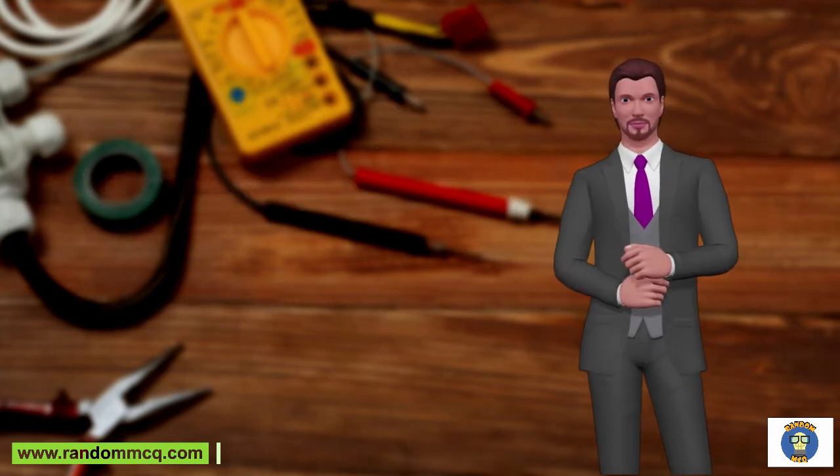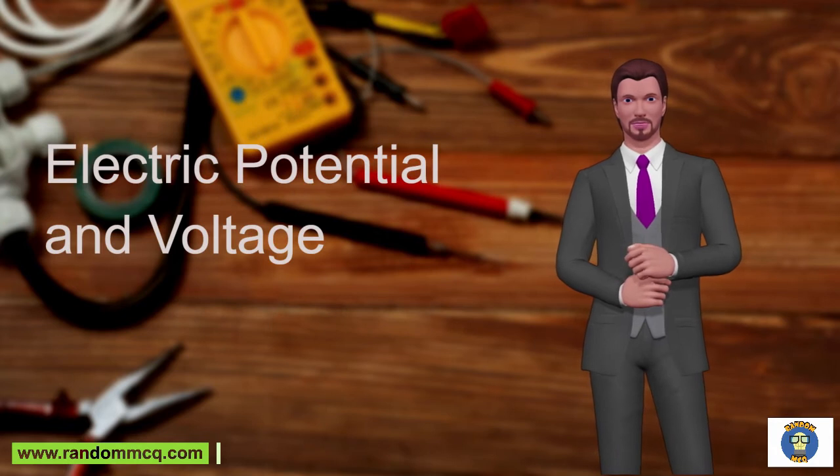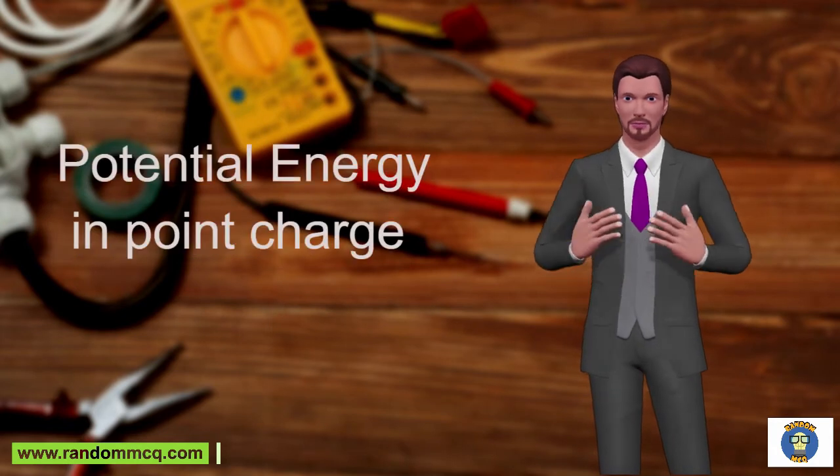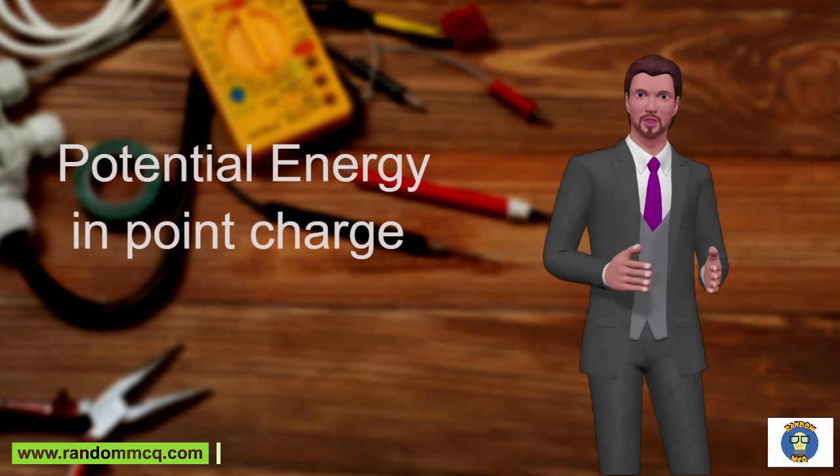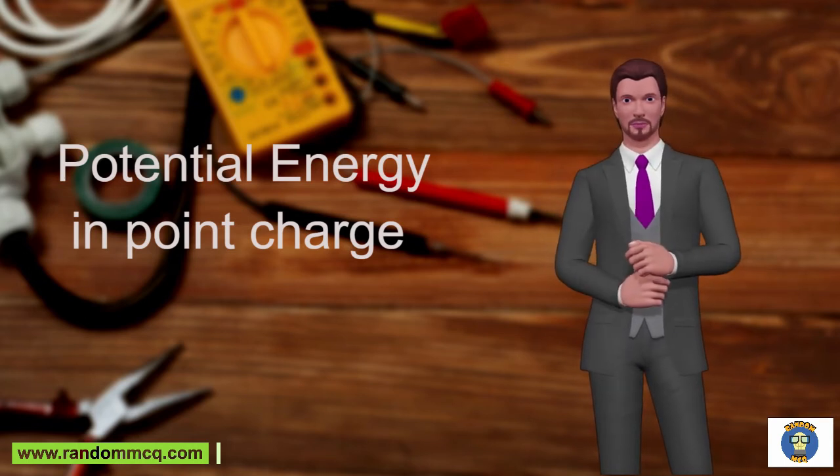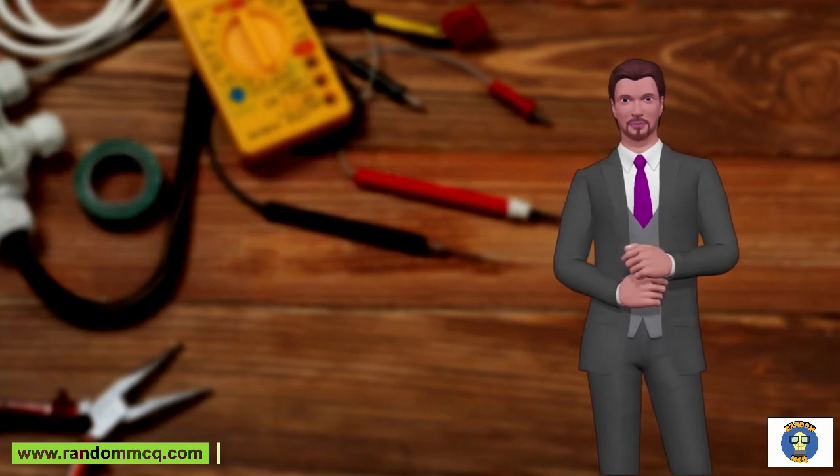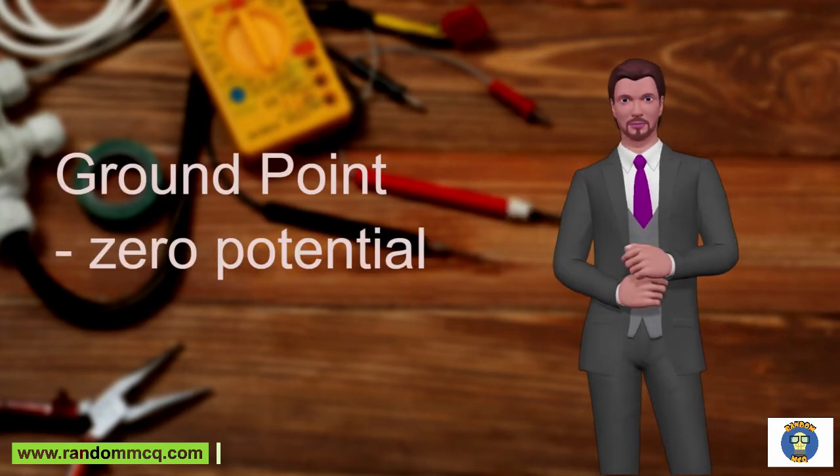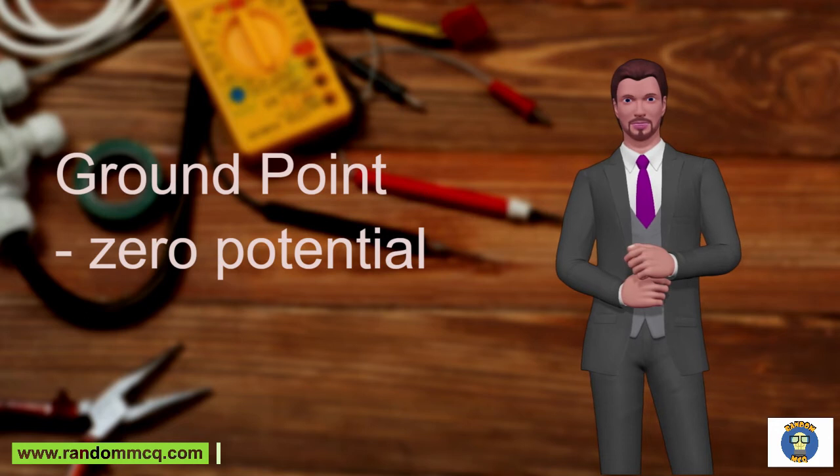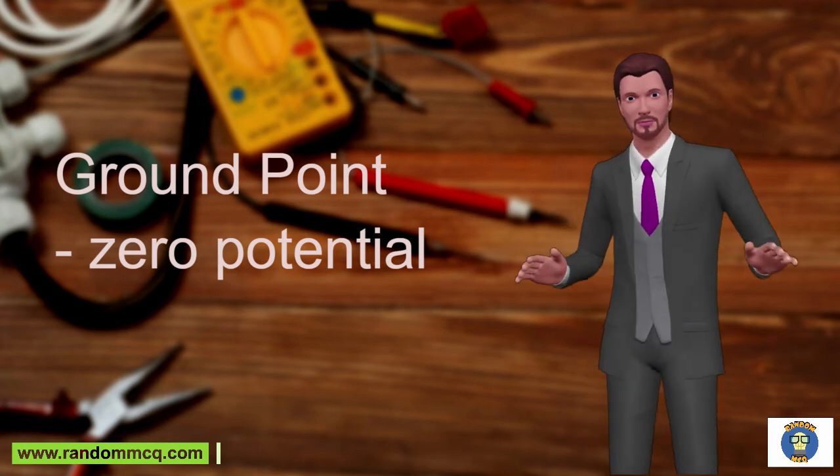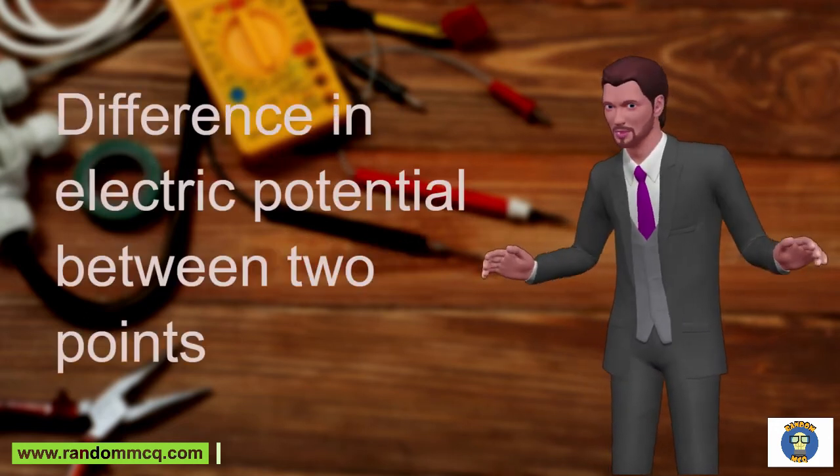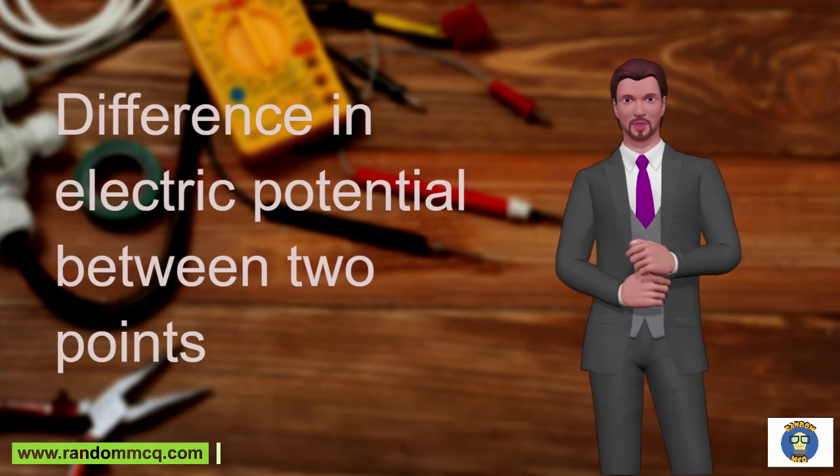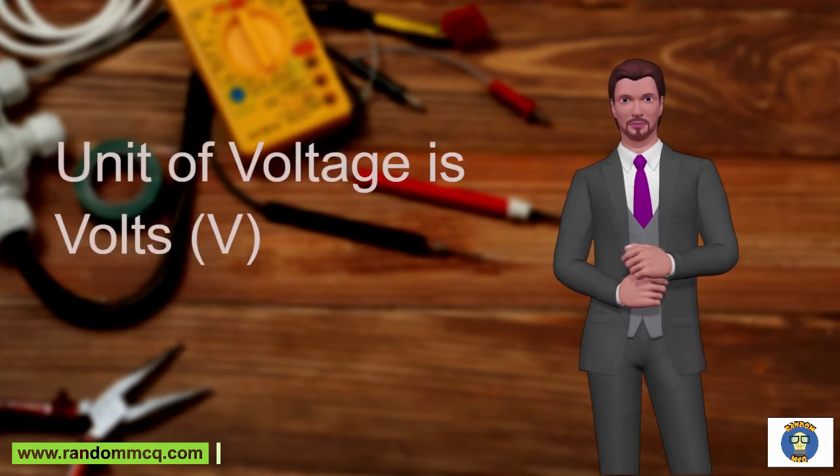What is electric potential and voltage? Electric potential refers to the potential energy that a charge at a given point possesses when acted upon by an electric force. The point where electric potential is zero is known as the reference point or ground point, with respect to which potentials at other points are then described. The potential difference, or voltage, is the difference in electric potential between two points. The unit of voltage is volts.